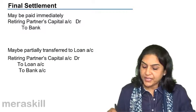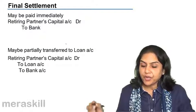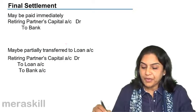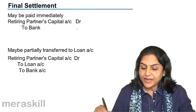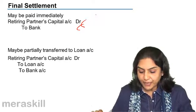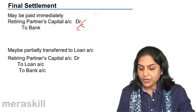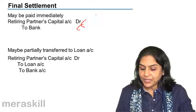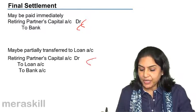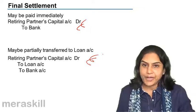Final settlement, as mentioned before, may be paid off immediately — retiring partner's capital account debit to bank — or may be partially transferred to a loan account. In that case, retiring partner's capital account is debited to both loan and bank.